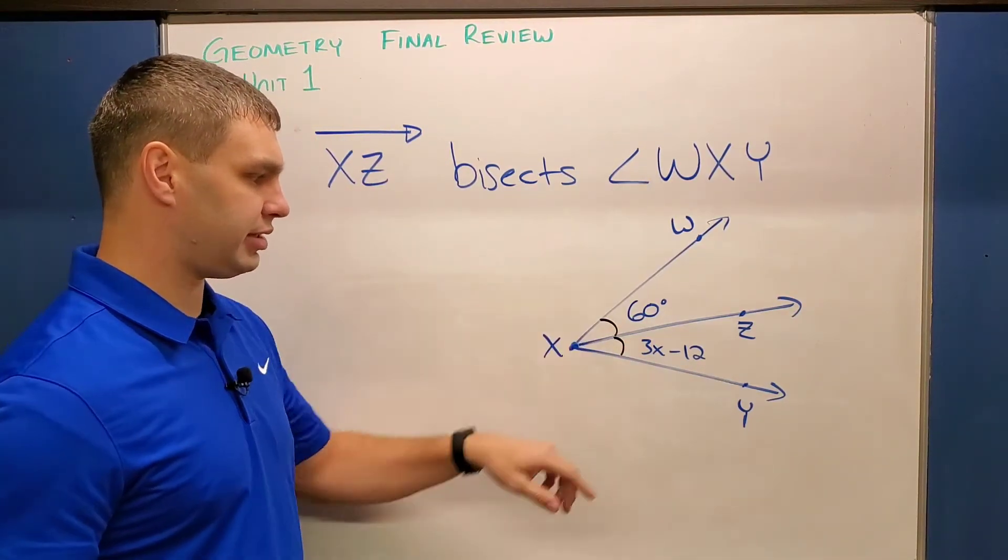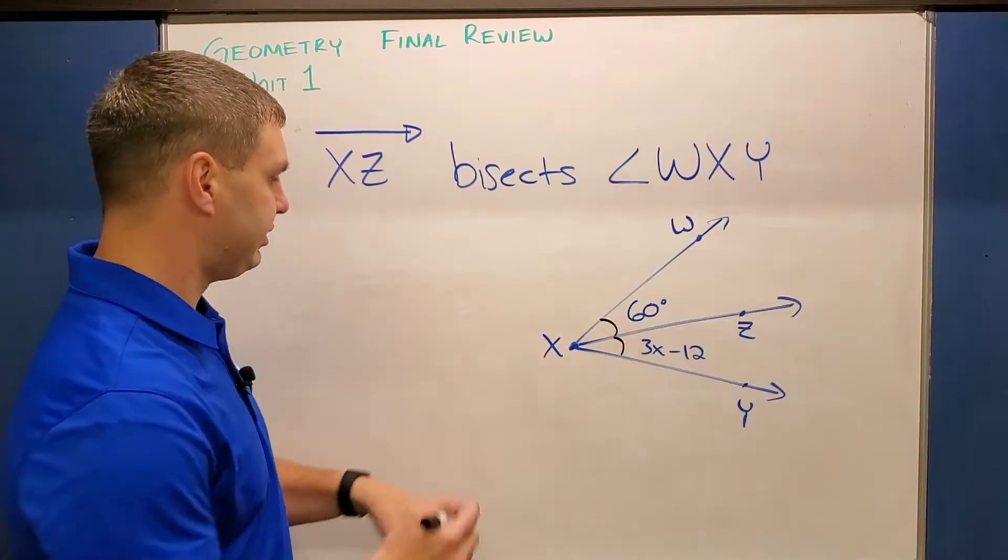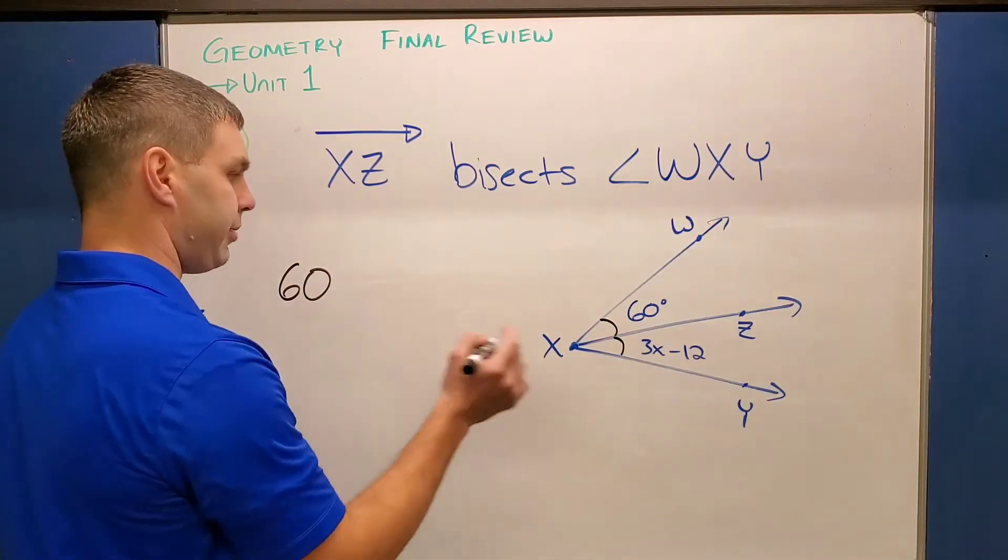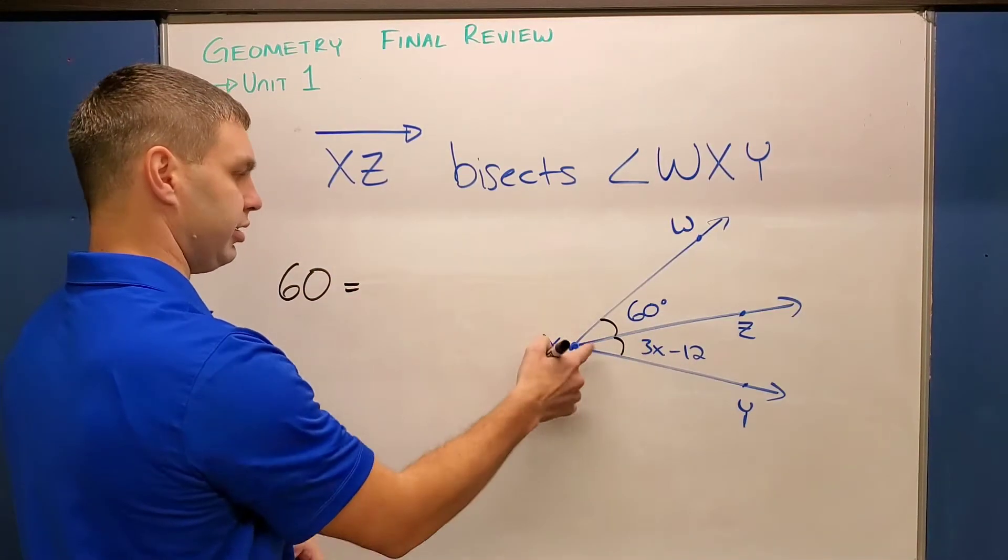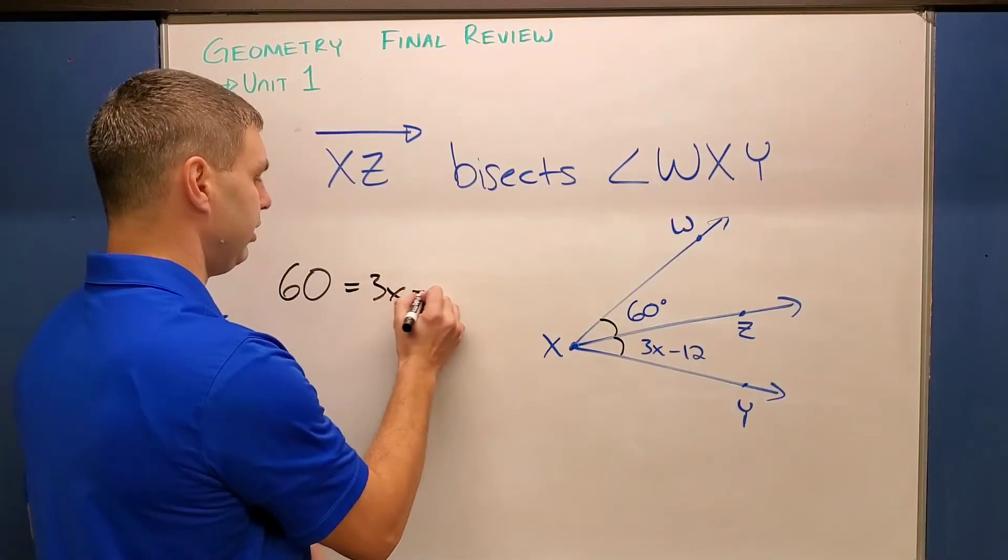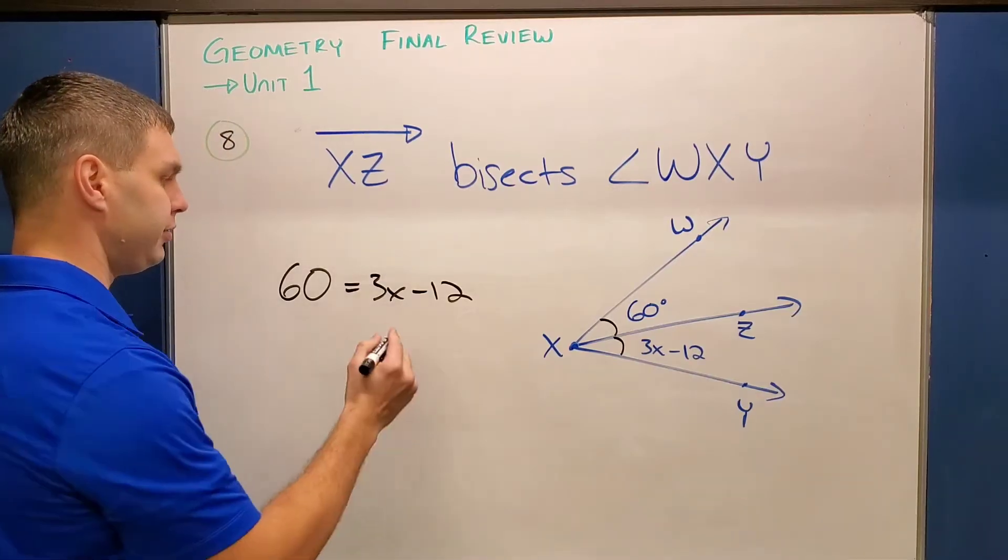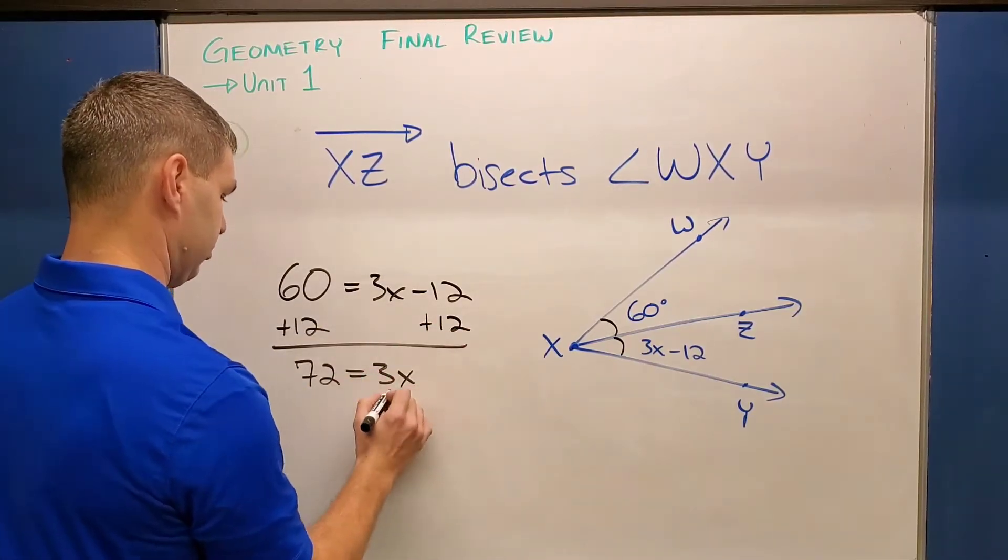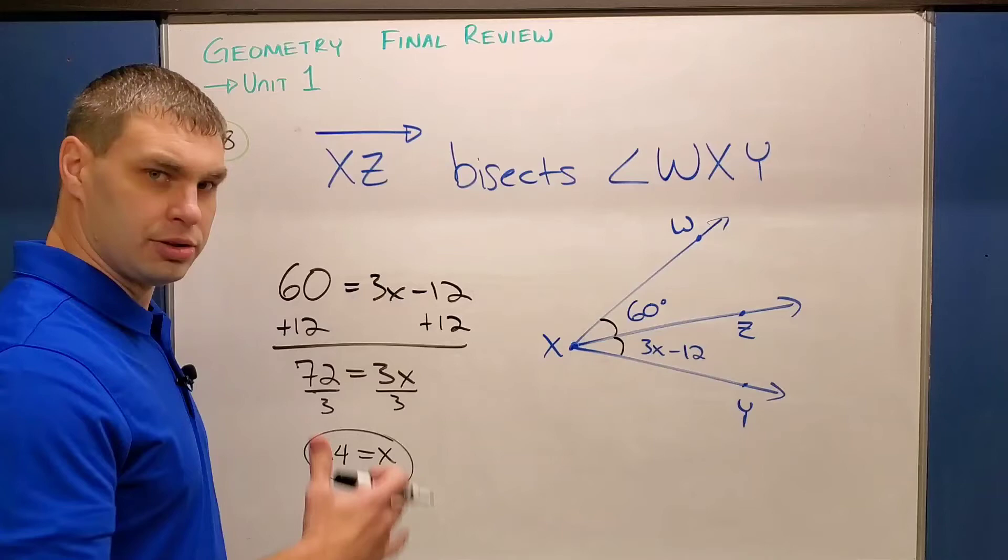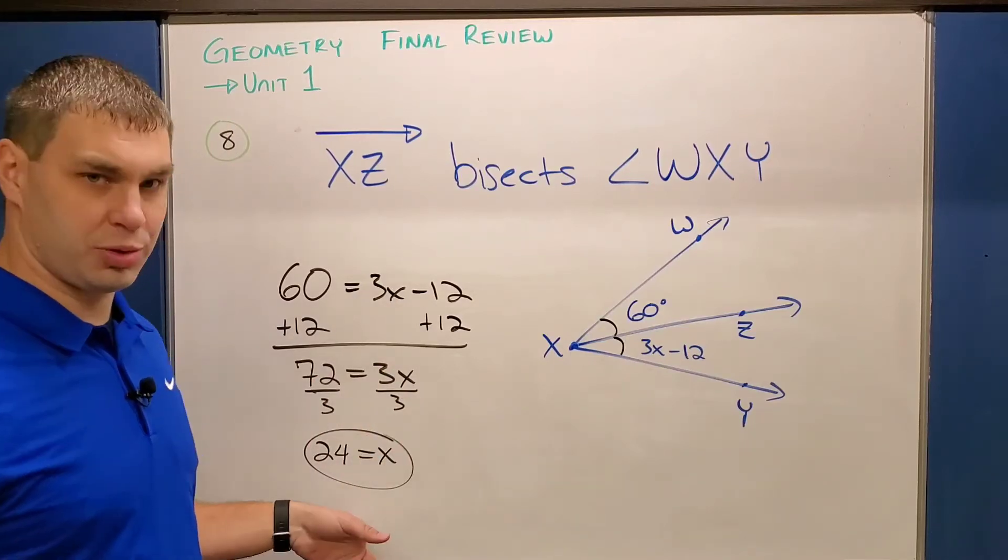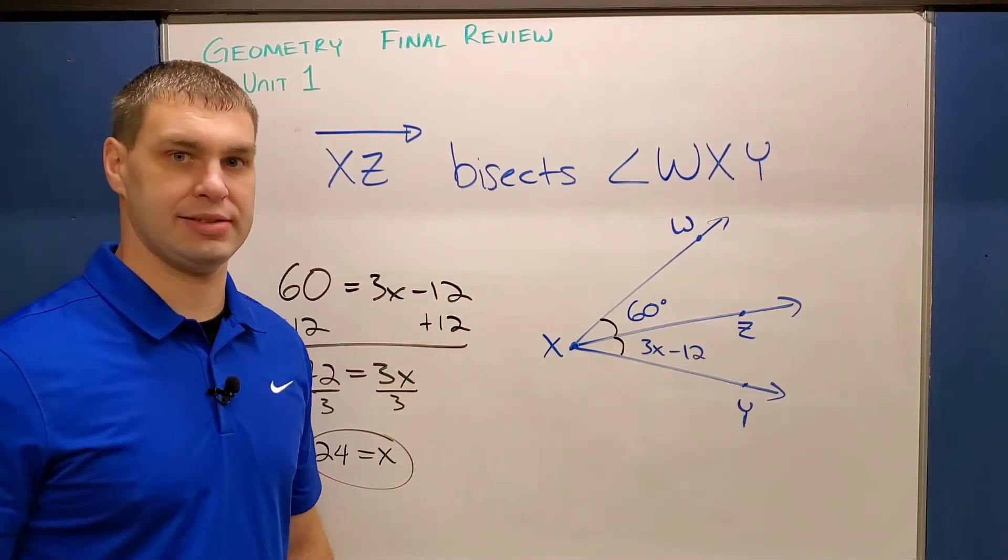So if that's true, what we can do to solve this situation is set 60, the top one, equal, since they're congruent, equal to our bottom one, 3X minus 12. And go ahead and solve for X like this. I'll do it real quick for you. So if I solve that real quick, I get X equals 24, which satisfies X in this problem.